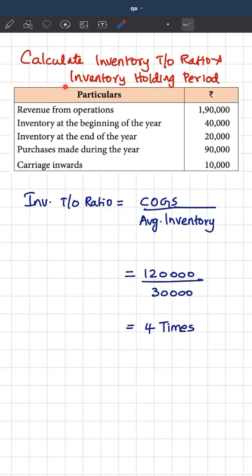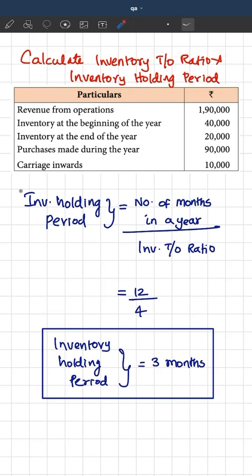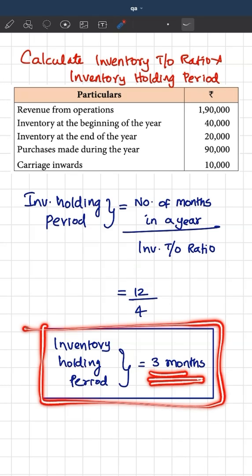Using this information, we can also find out inventory holding period. The formula for inventory holding period is number of months in a year divided by inventory turnover ratio. So 12 months divided by 4 times, that is inventory turnover ratio, you get the value as 3, which is nothing but inventory holding period for 3 months.